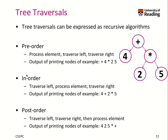The in-order is an alternative traversal. You traverse left, then you process the element on the current node, and then you go to the right. In this case it leads to our expected expression: we go left to four, process the element plus, go right, go left to two, process the element times, then go right to five. That's basically the expression.